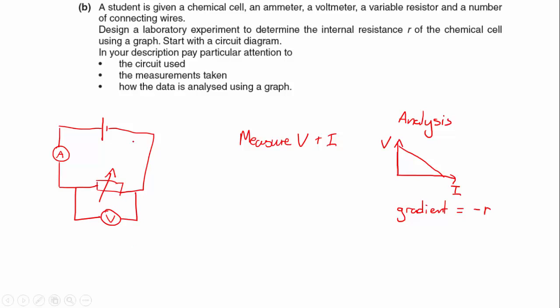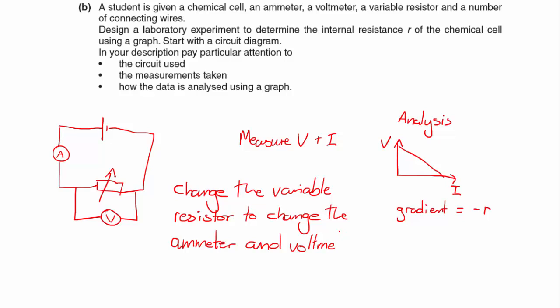So basically how the measurements are taken, what we need to do is change the variable resistor to change the current, to change the ammeter and voltmeter readings. Okay, now that should be all four marks.